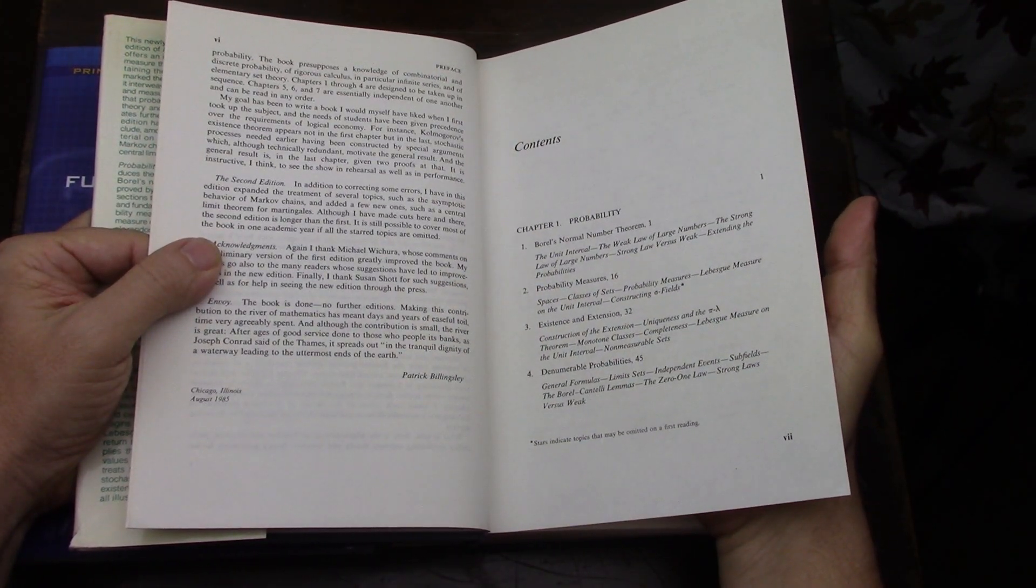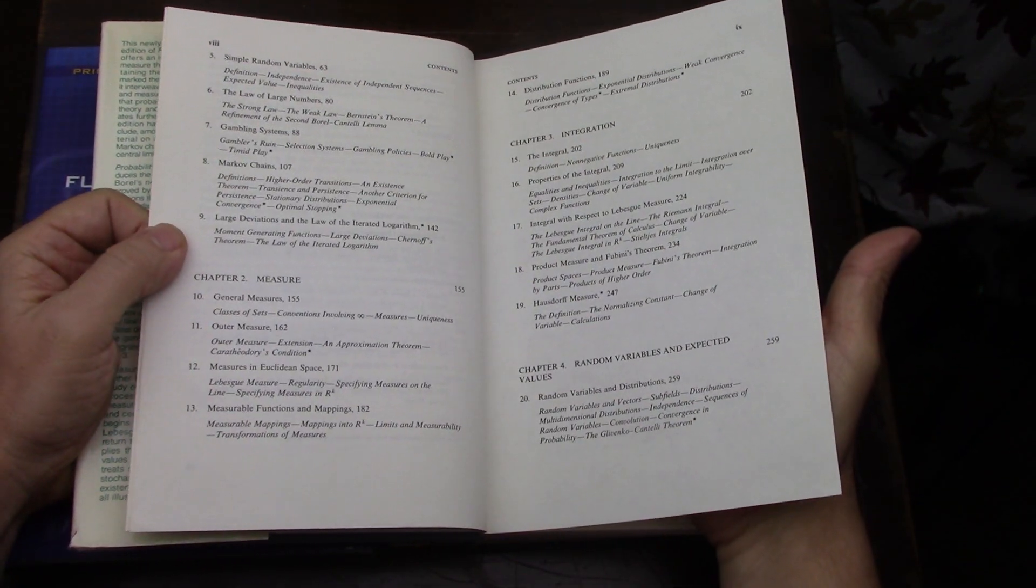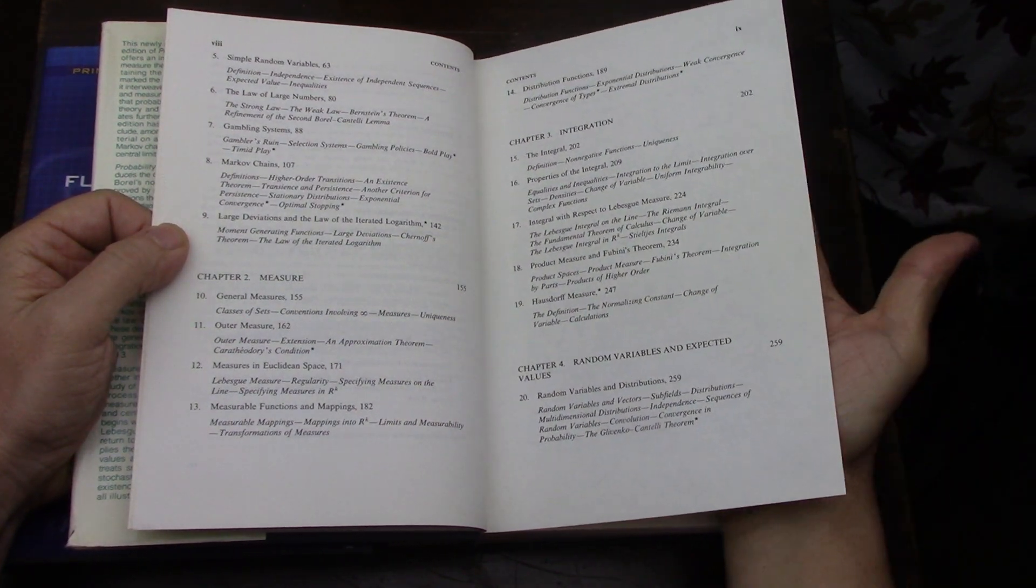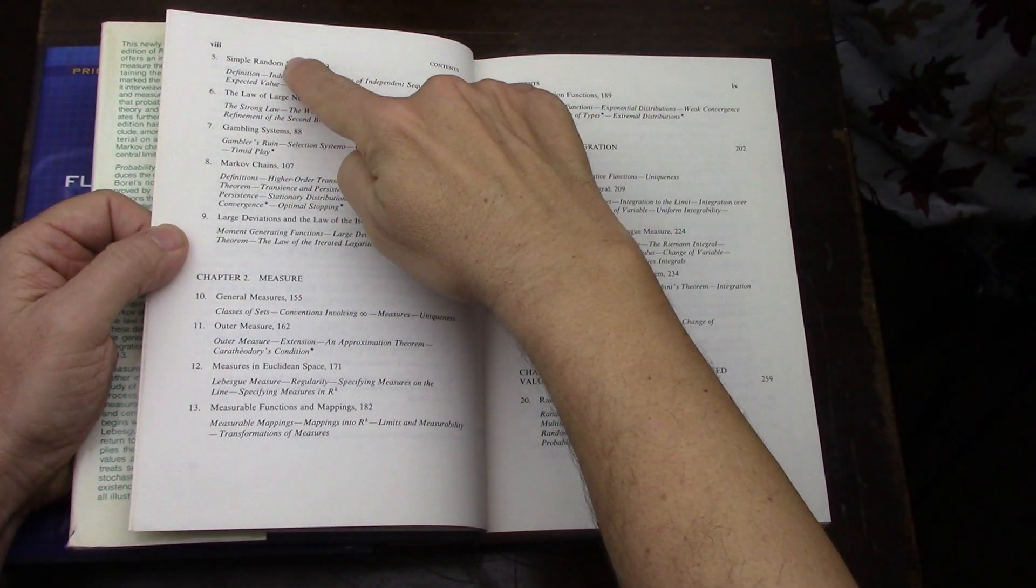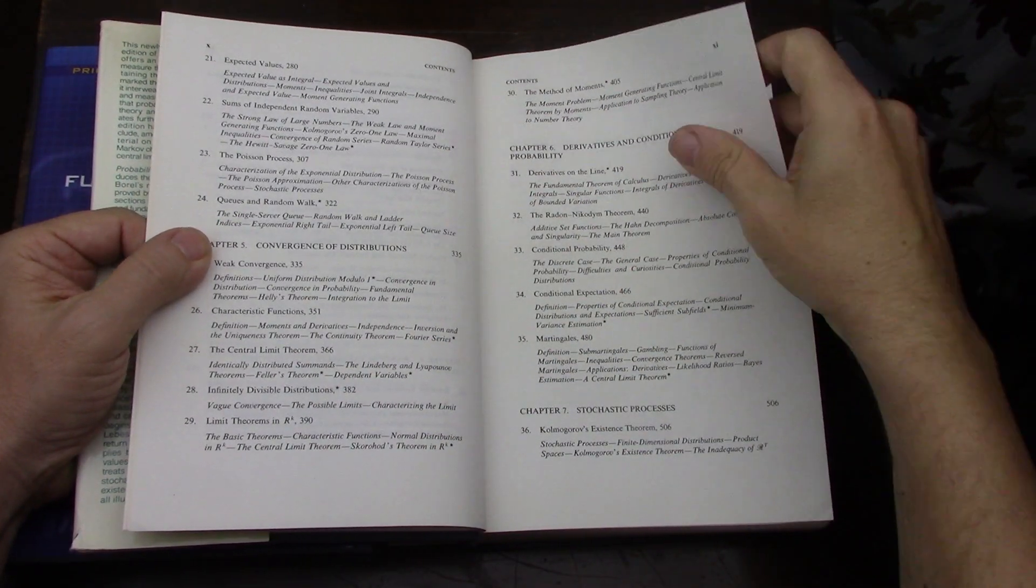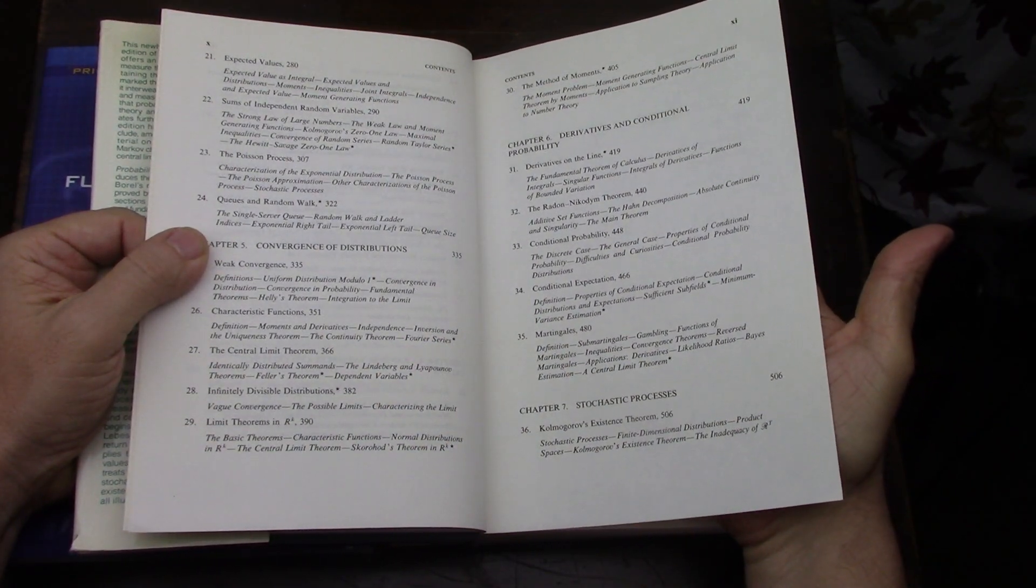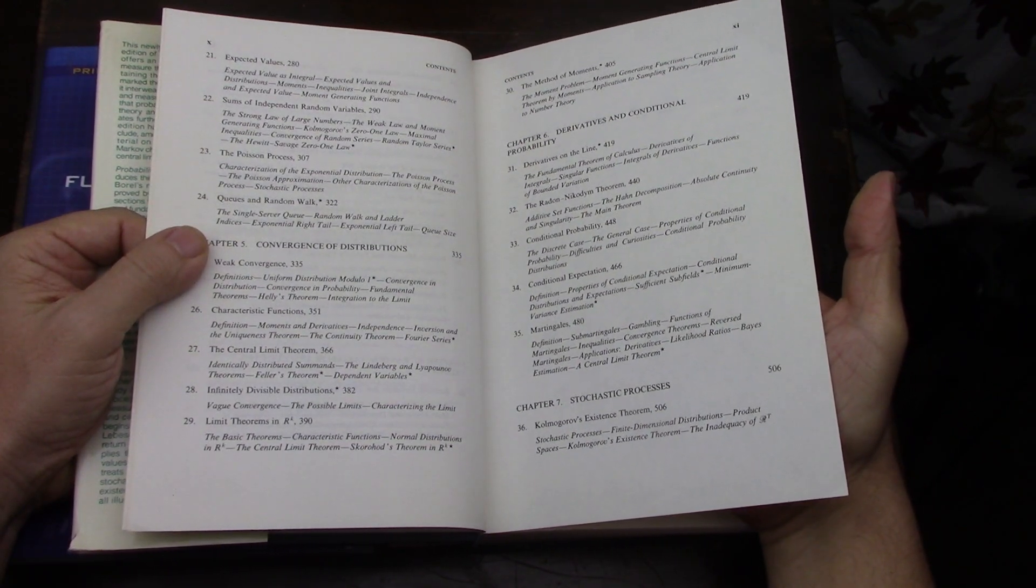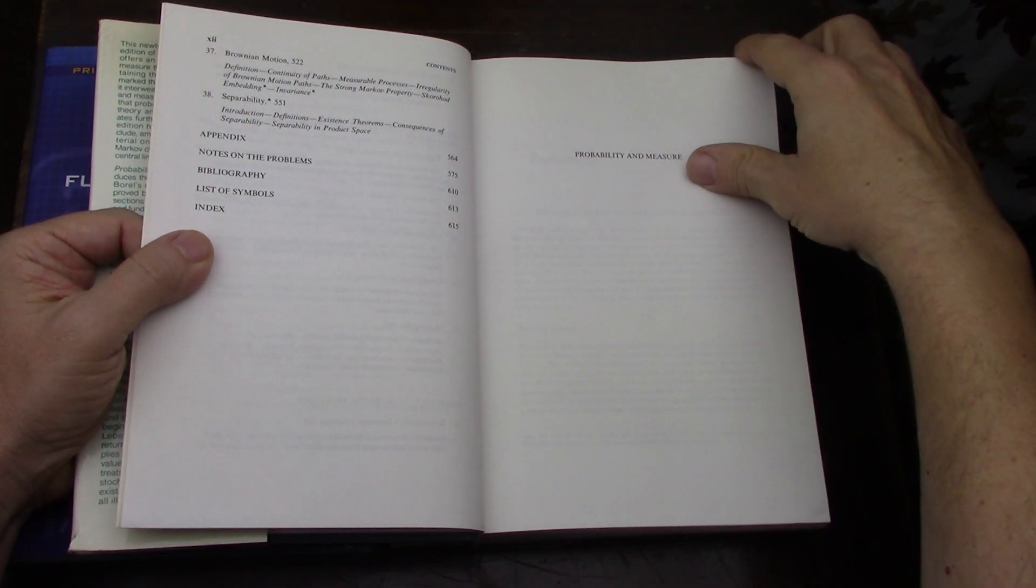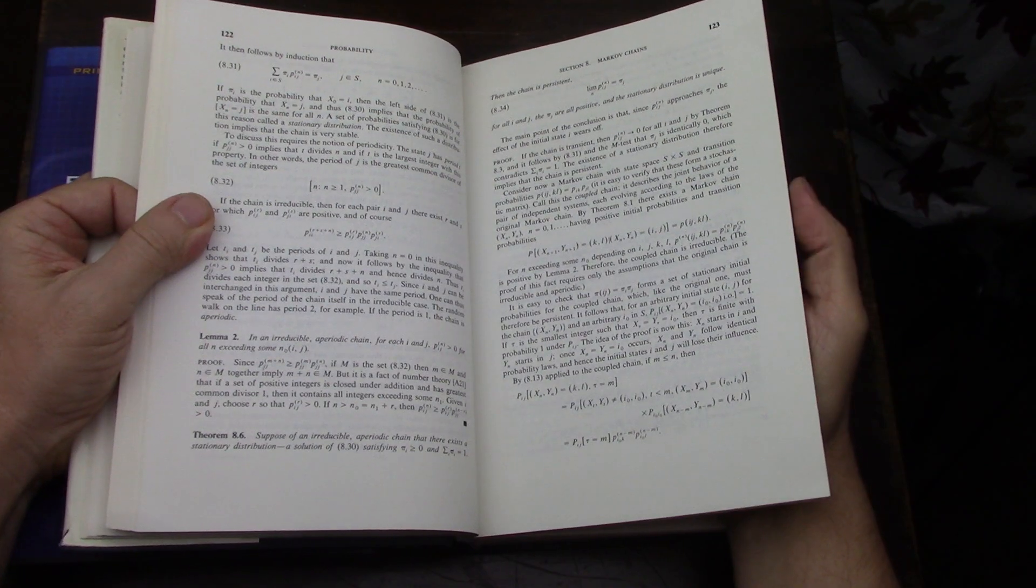So I'll just briefly show the table of contents for this book. I've had it for a while, but I've never made a video about it. The Lebesgue measure, random variables, Markov chains, expected values, the central limit theorem, Martingales of which there's like whole books about, stochastic processes and Brownian motion. So this book couples very well with the content in the fourth Princeton Lectures in Analysis book.